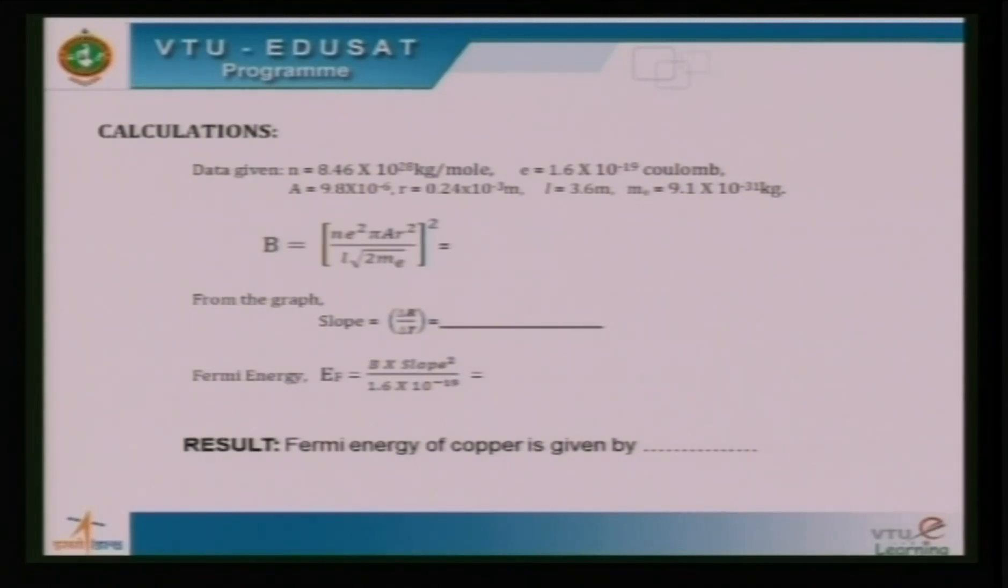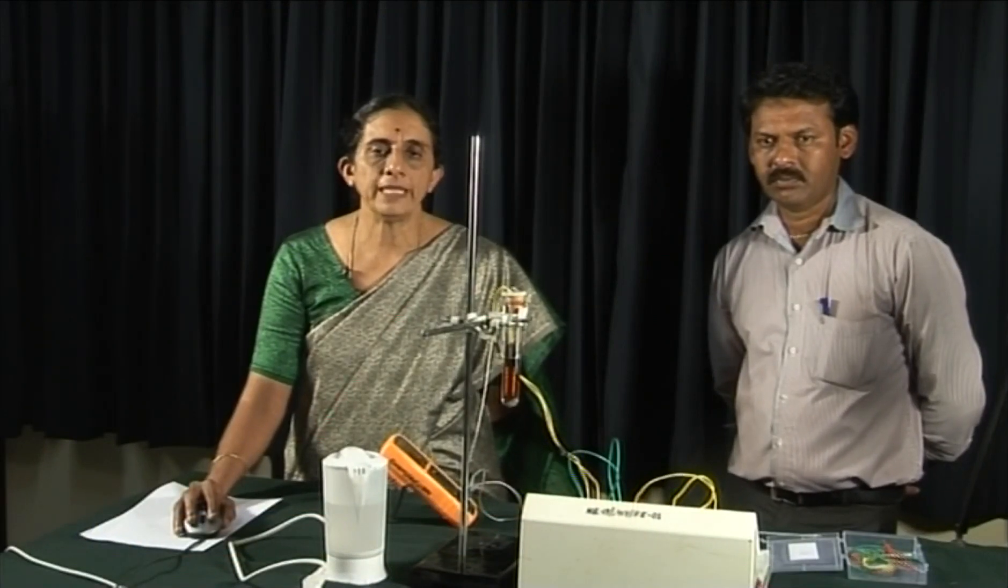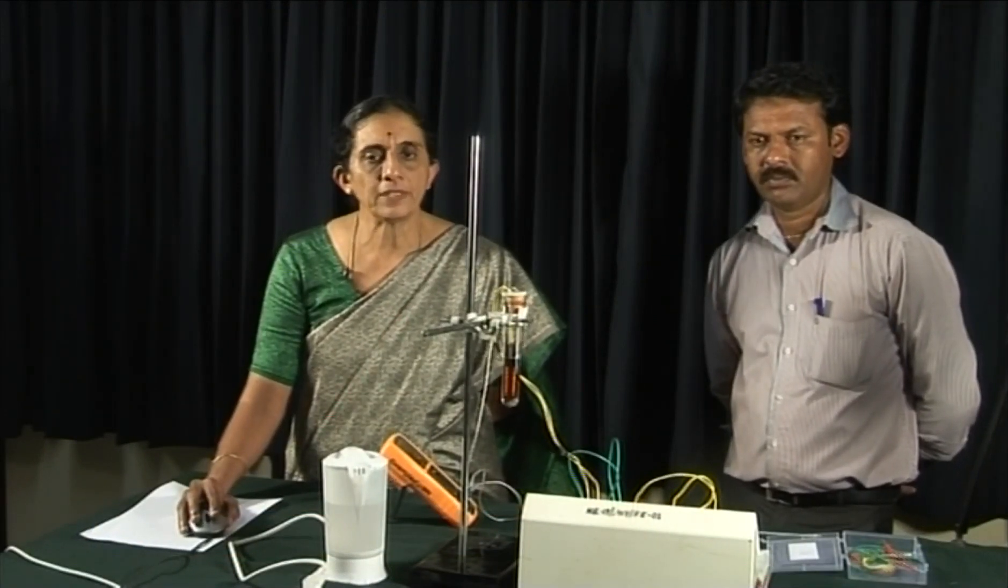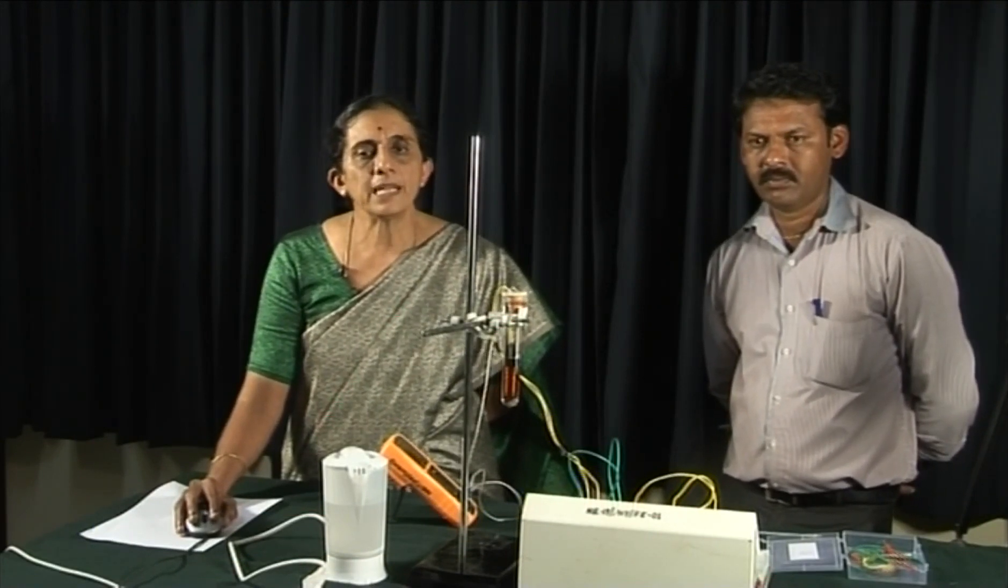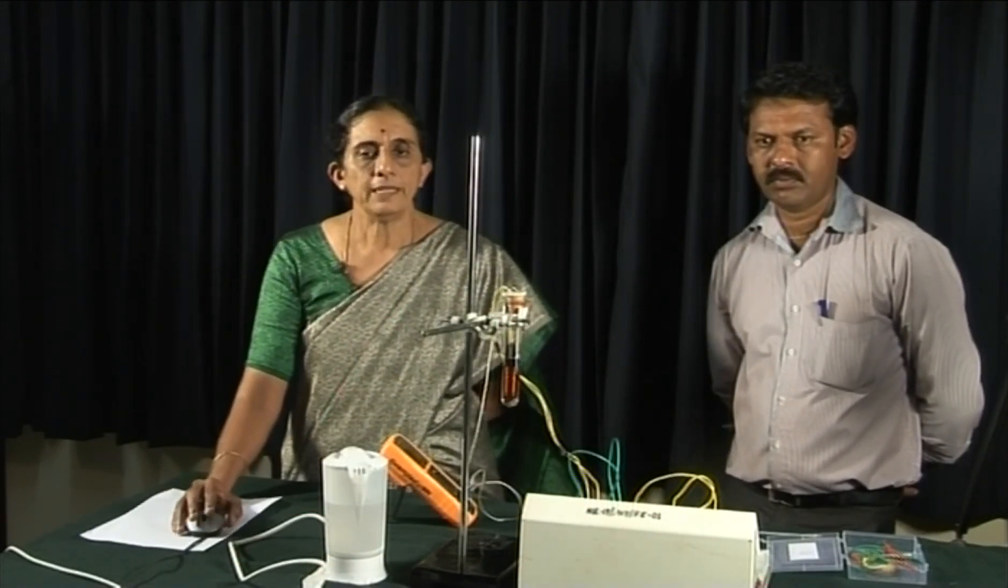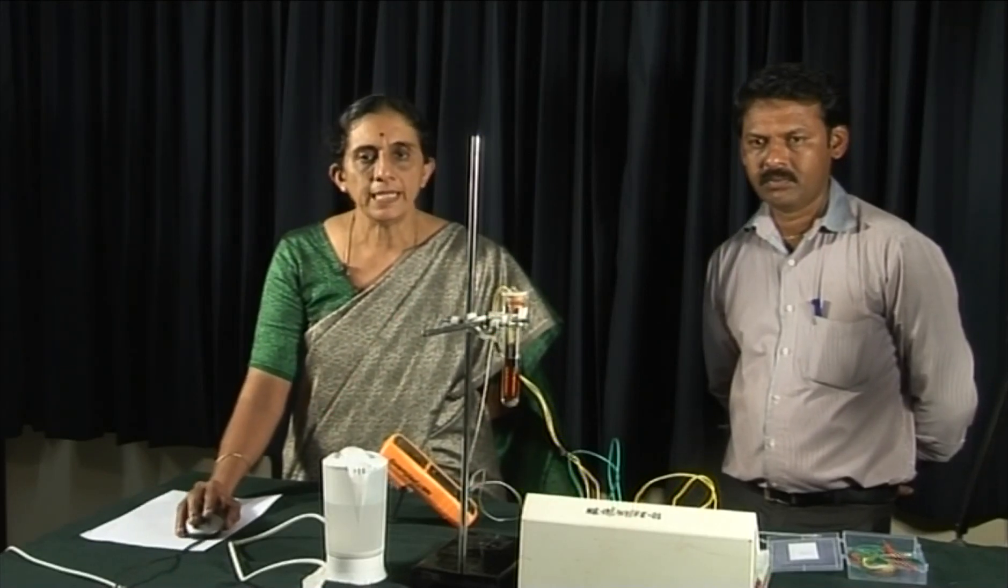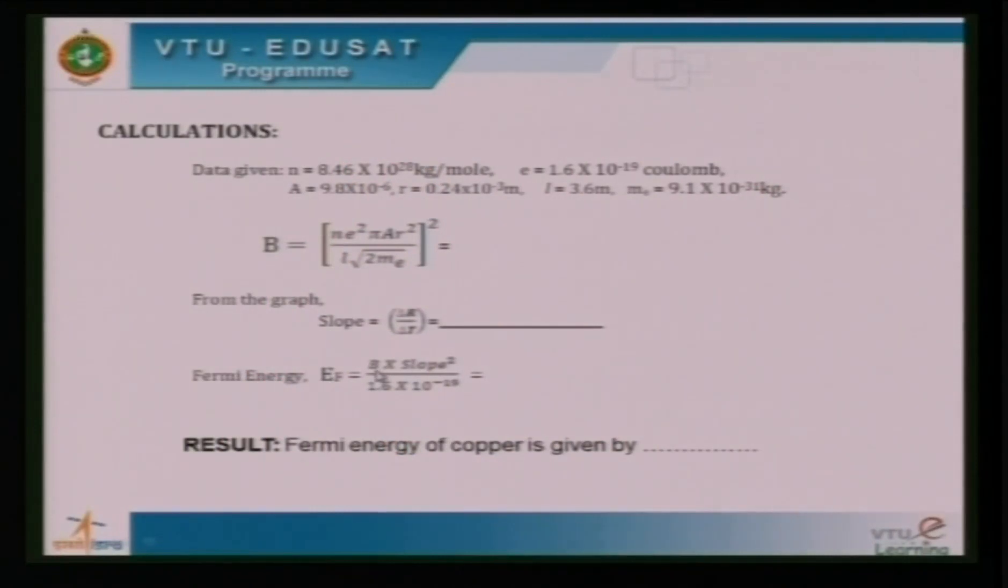E is electronic charge 1.6 into 10 power minus 19 Coulomb. Pi is a constant 3.14. A is lambda into T. Lambda is nothing but mean free path of copper that is available in the catalogue and we determine that value. R is the radius of the copper wire. L is the length of the copper wire. ME is mass of the electron. We have to determine B separately and insert it in the formula here so that it is easier to determine the value of the Fermi energy of copper in electron volt.